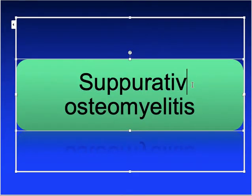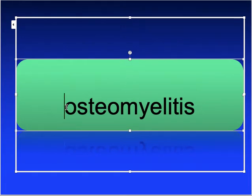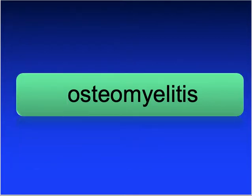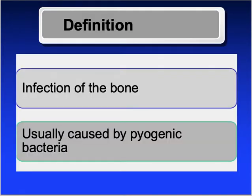Osteomyelitis is basically infection of the bone — 'osteo' means bone — and due to that infection there will be inflammation. It frequently represents a diagnostic challenge to the doctor. It can be caused by a variety of organisms: gram positive, gram negative, mycobacteria, or fungi, but there is a most common organism we will discuss shortly.